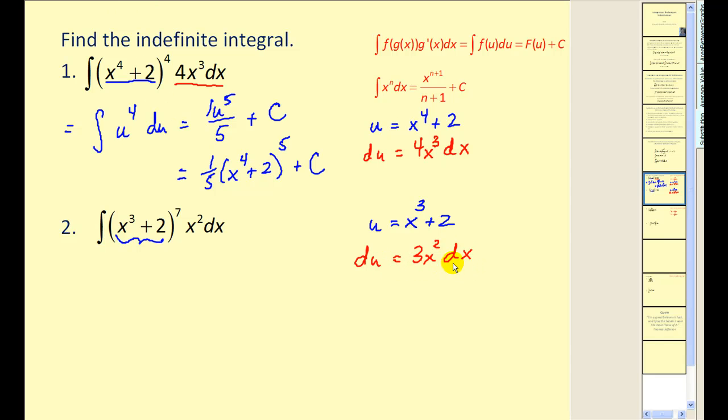Now if we take a look at our integral, we don't have 3x^2 dx, we just have x^2 dx. So what we can do is divide by three on both sides, so we would have (1/3)du equal to x^2 dx. I always like to make this match the integral exactly so we can do our direct substitution.